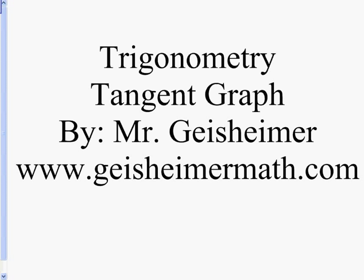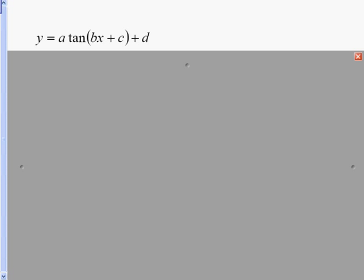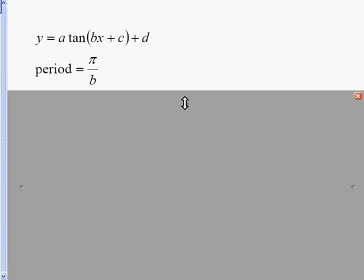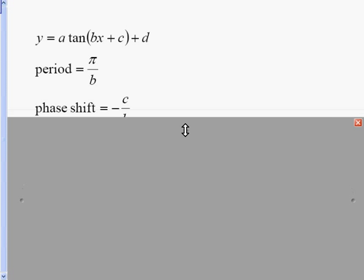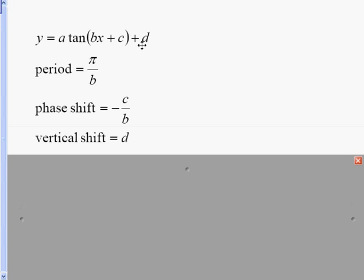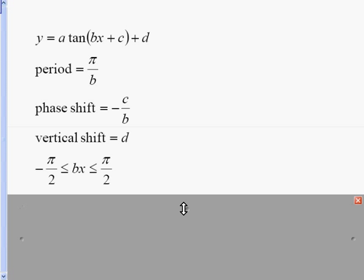Let's look at graphing a tangent curve. We'll start by looking at the formula: y equals a times the tangent of bx plus c, plus d on the outside. a comes back later when we start to graph. We first look at our period, which is pi over b, b being the number in front of x. Our phase shift is negative c over b — the opposite of the inside number divided by b. Our vertical shift is d if there's a number on the outside. For all tangent curves I like to write this interval: negative pi over 2 is less than or equal to bx, less than or equal to pi over 2. This will help me find my asymptotes.